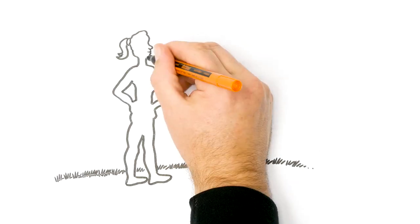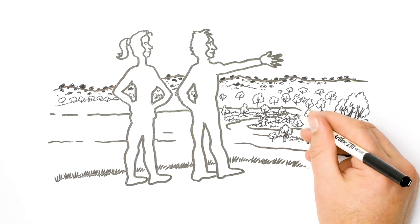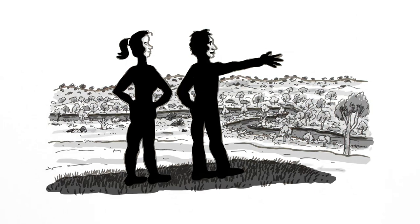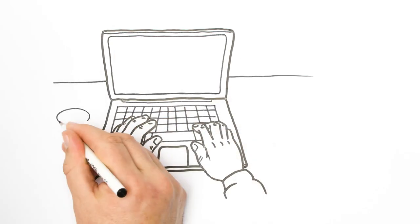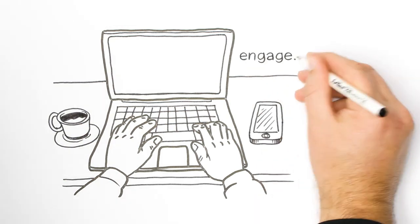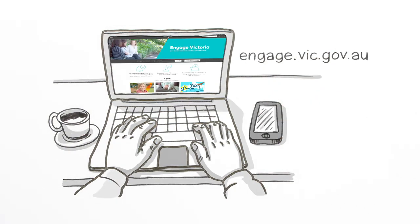The draft plan balances the needs of our natural environment with the needs of local landholders and visitors to the area. To provide feedback and read the detailed draft plan, visit engage.vic.gov.au.